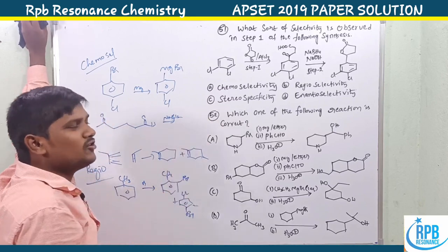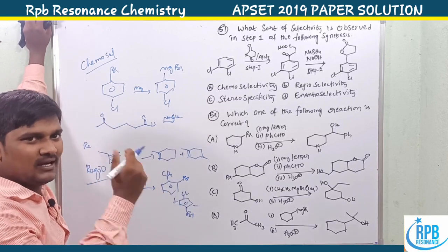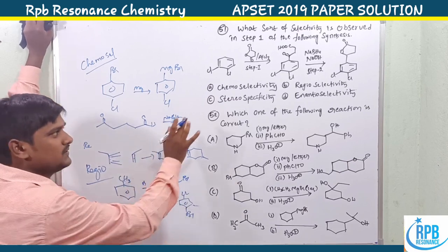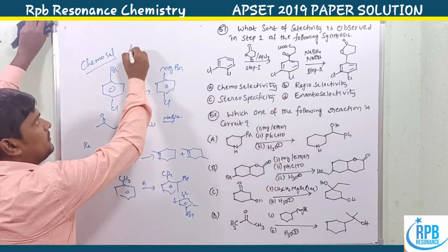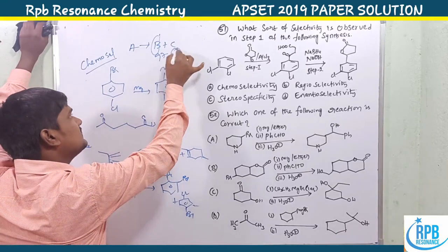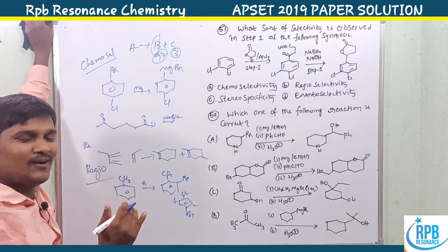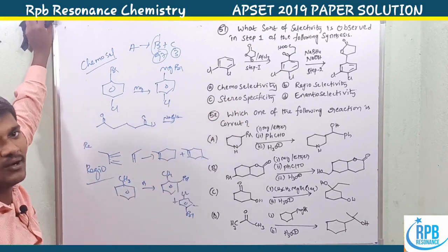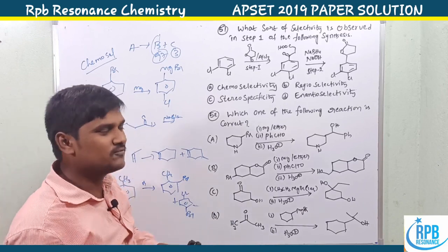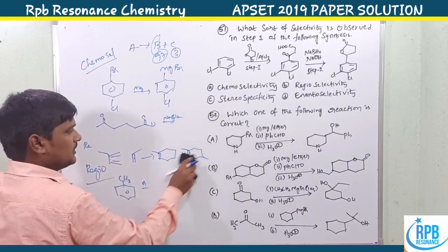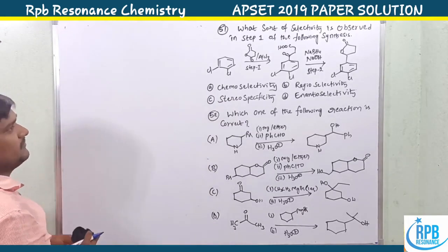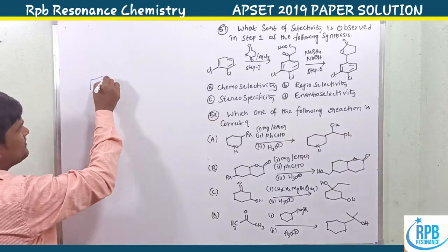Stereoselectivity or stereospecificity: whether the product is above the plane or below the plane, R-alcohol or S-alcohol — that concerns stereochemistry. Enantioselectivity means one enantiomer is obtained in 97% while the other is 33%, or selectivity favoring one enantiomer over another equally. These four — enantio, regio, chemo, and stereoselectivity — are the basic definitions.